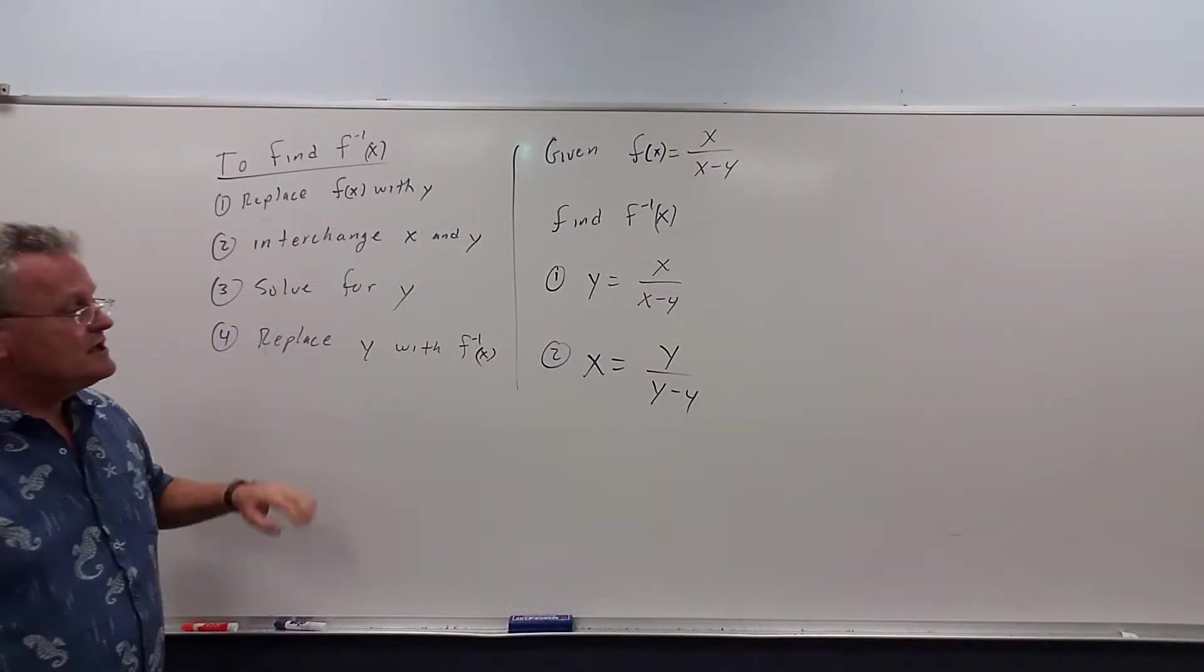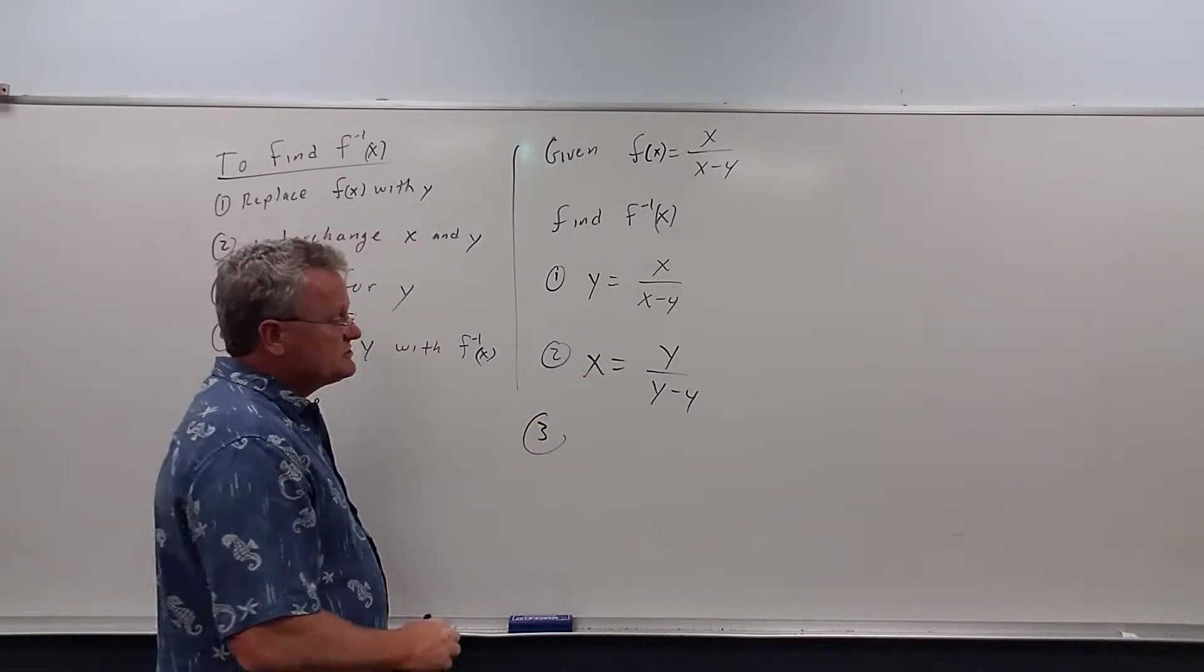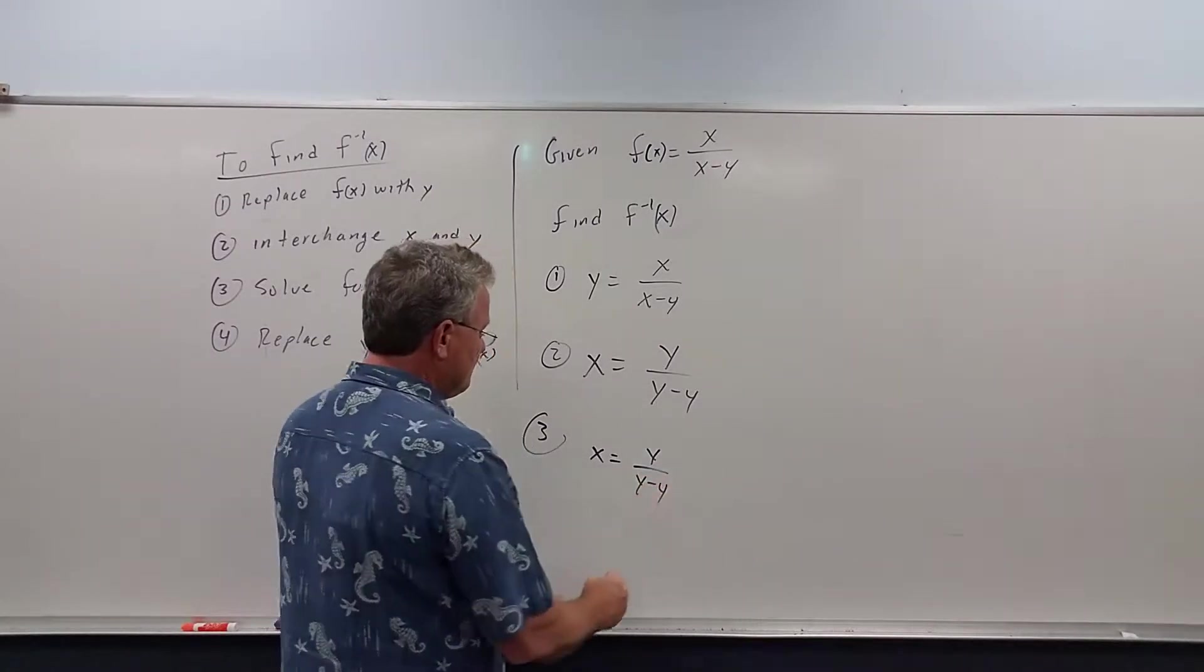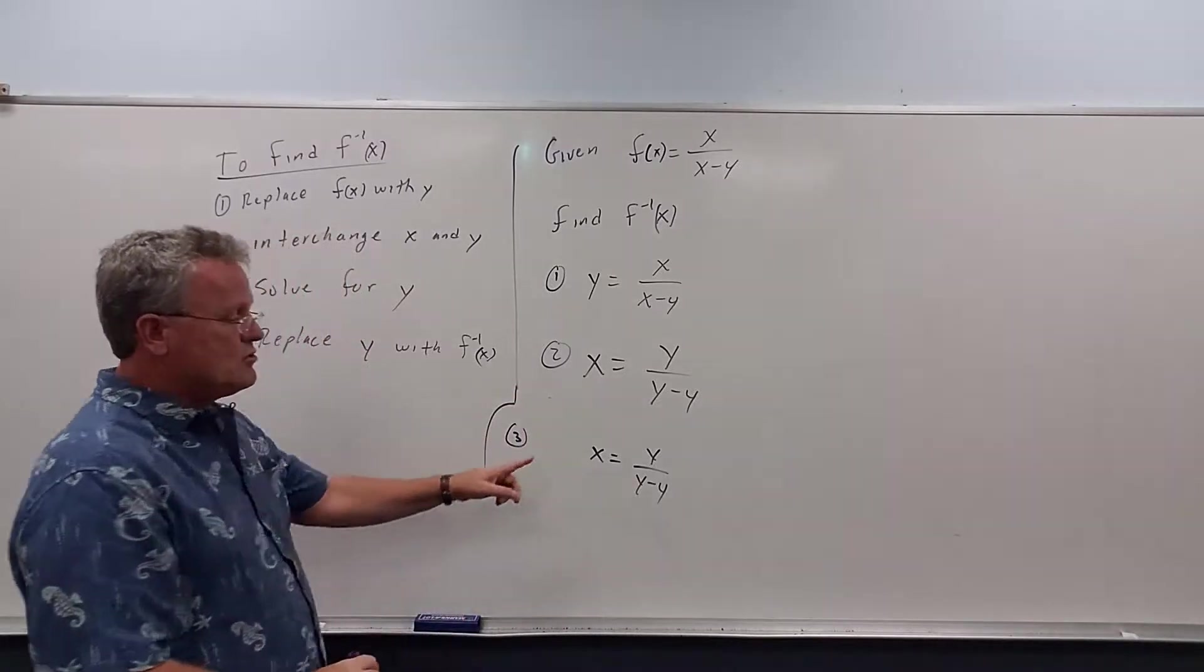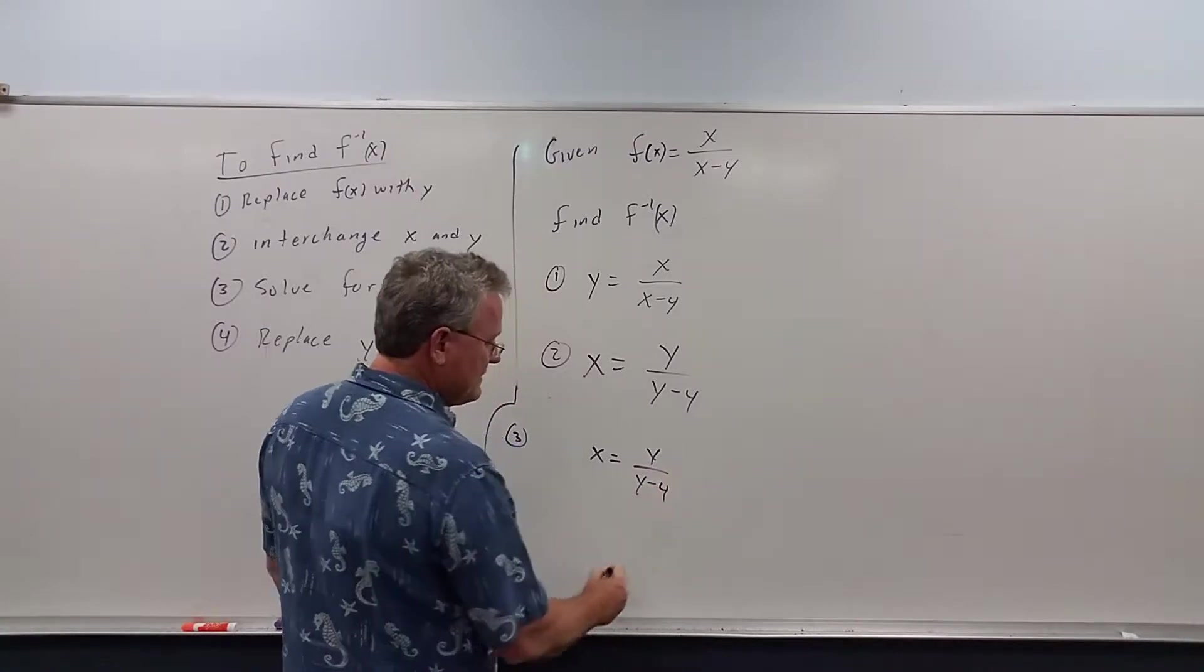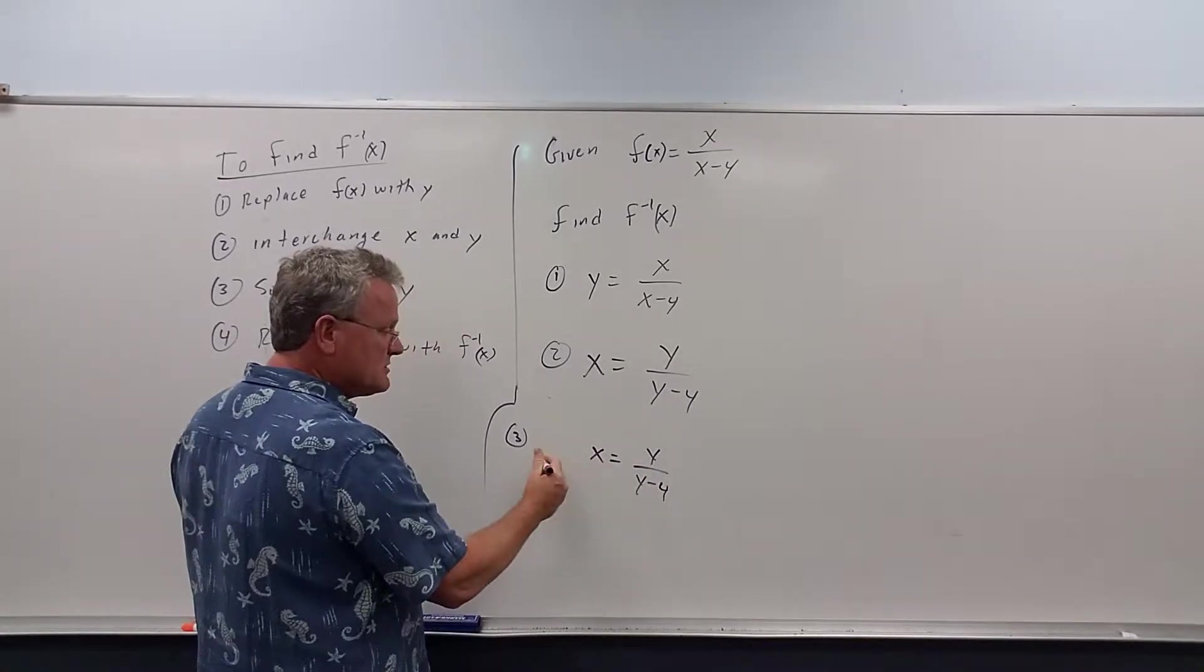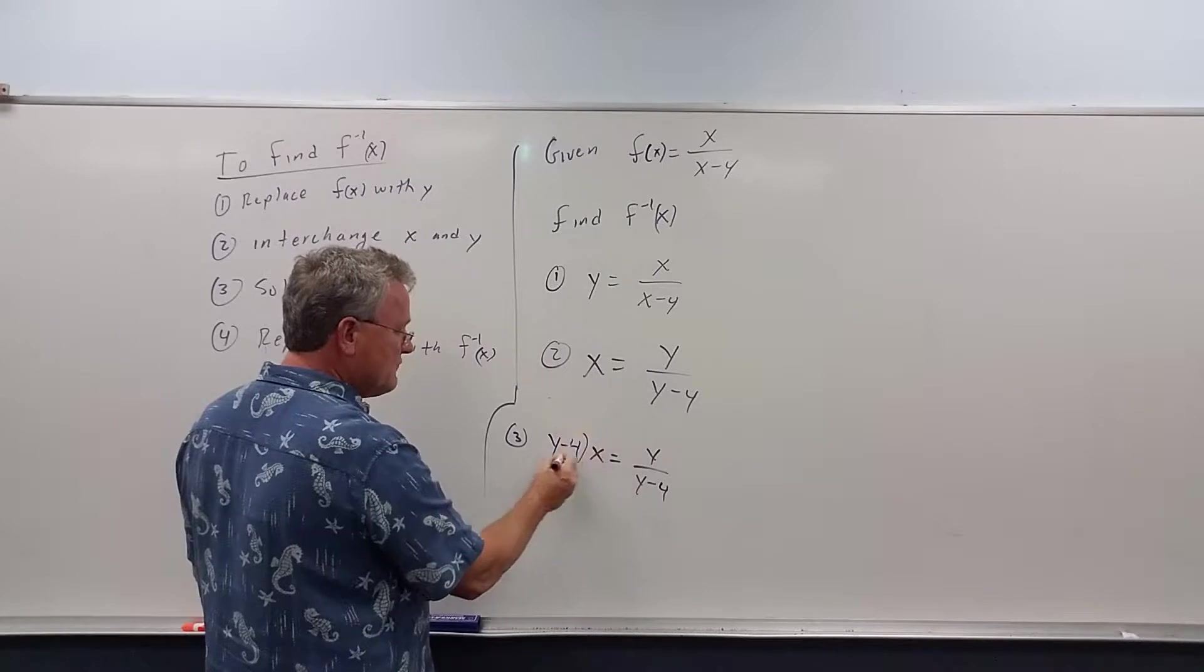Step 3: We now need to solve this for y. So to solve for y, this equation, the first step is to multiply both sides by y minus 4. I should probably use a different number than 4 because my 4 looks like a y. But let me try to do better writing it. So we multiply both sides by y minus 4.